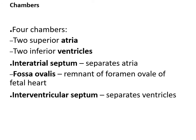There are four chambers in the heart — two superior atria, which are the receiving chambers, each with a protruding auricle, and two inferior ventricles. There's a septum in the middle separating the two atria and ventricles. The one separating the atria is called the interatrial septum, with a little depression called the fossa ovalis — a remnant of the foramen ovale of the fetal heart. The septum between the ventricles is called the interventricular septum.